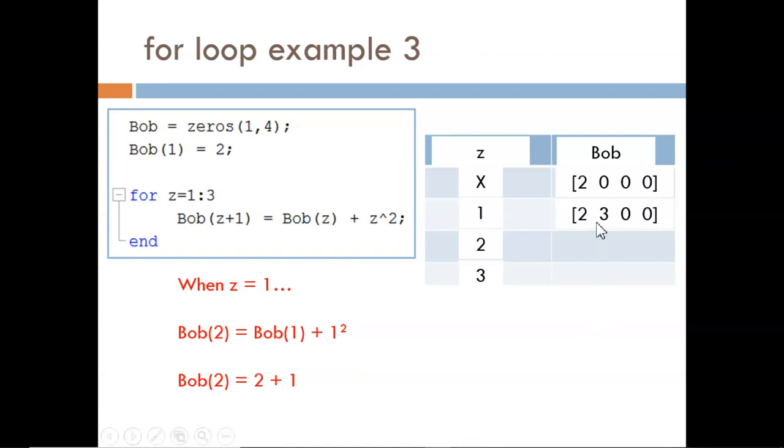The next time through, z equals 2 and the command reads like this. So a 7 is assigned to the third index in Bob.